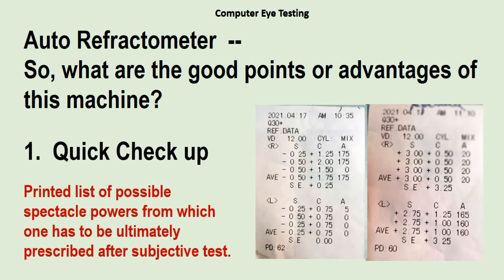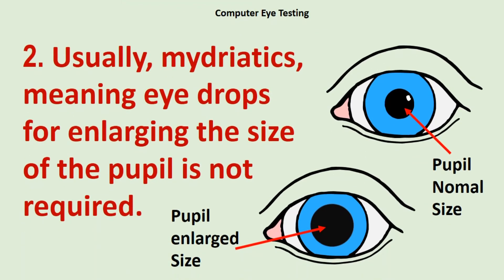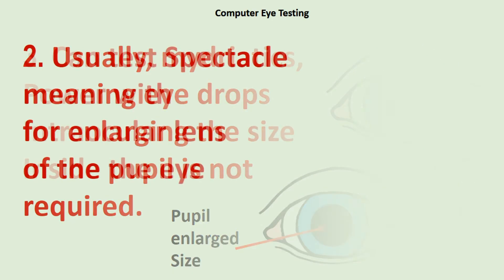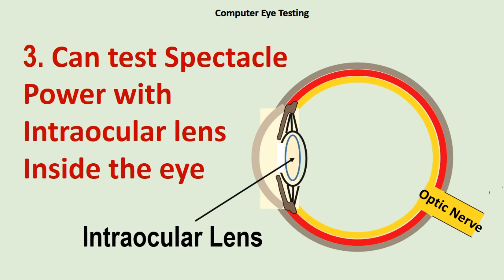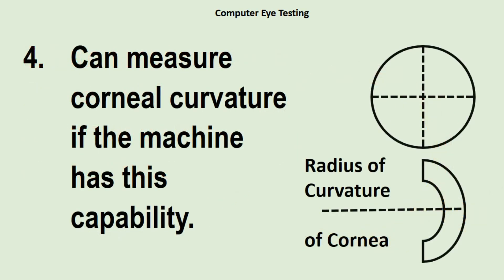So what are the good points of this machine? Number one: it gives very quickly a printed list of possible spectacle powers, from which one has to be ultimately prescribed after subjective confirmation with the patient. Number two: usually mydriatics — eye drops for enlarging the pupil — are not required. Number three: it can test spectacle power with an intraocular lens inside the eye. Number four: it can measure corneal curvature, if the machine has this capability.